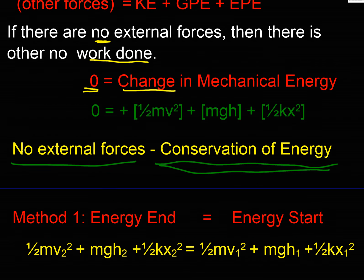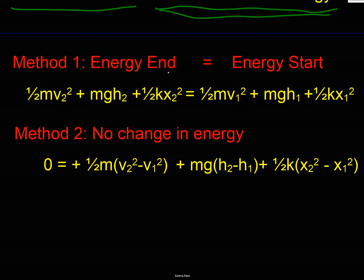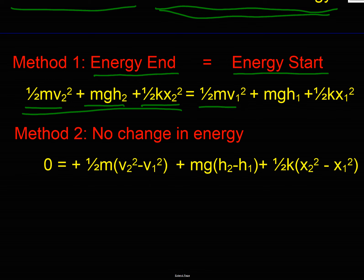There are two ways of writing conservation of energy. I prefer the first version: if there's no change in mechanical energy, then the mechanical energy at the end must equal the mechanical energy at the start. So KE + GPE + EPE at the end must equal KE + GPE + EPE at the start. The other way is to look at the changes: zero must equal the change in kinetic energy (driven by change in v²), plus the change in gravitational energy (driven by change in h), plus the change in elastic energy (driven by change in x²).